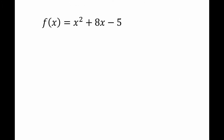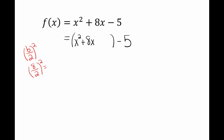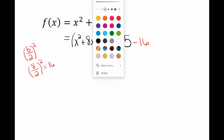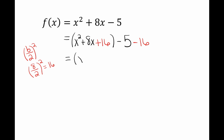Let's look at an easier example. I can't tell whether it goes up, down, left, or right, so I'm going to set it up like the first example. The first thing I do is group together my variable terms — the terms that have an x — putting x squared plus 8x in parentheses. I'm going to complete the square: my b value is 8, so I take 8 divided by 2 and square it — that's b over 2 squared — and I get 16.